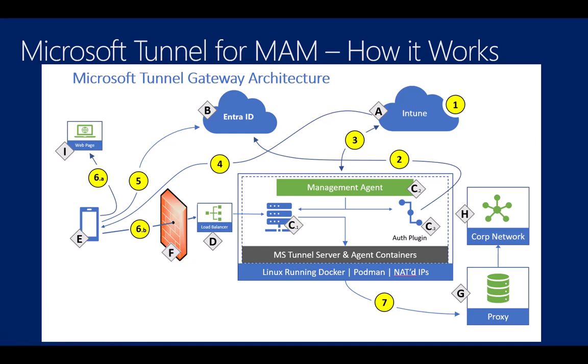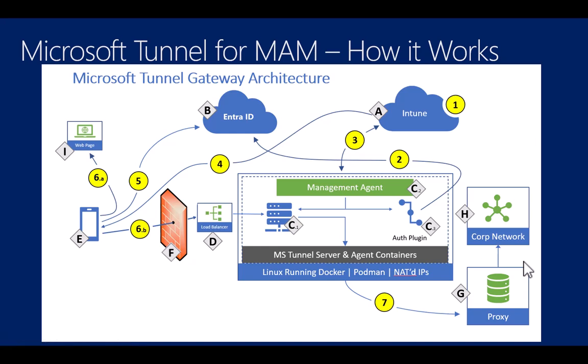Finally, the device authenticates whenever it needs access and then communicates. There's a kind of split tunneling: some traffic goes through the tunnel, some goes to the public internet. The tunnel then routes traffic to your internal proxy server if applicable, and then finally to your corporate network. This works the same way whether it's an app on an unenrolled device or a fully managed device. What you get in the Intune suite is the ability to extend tunnel support to devices managed only through MAM — unenrolled devices.